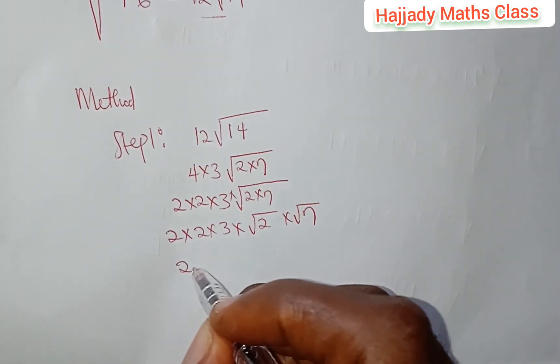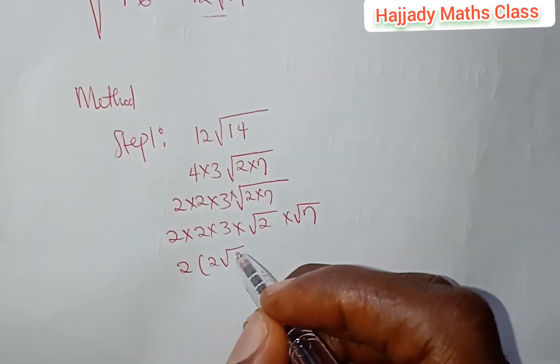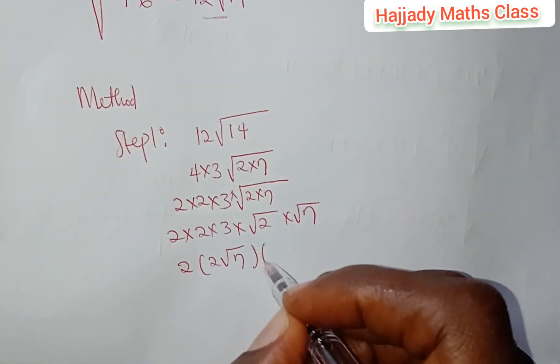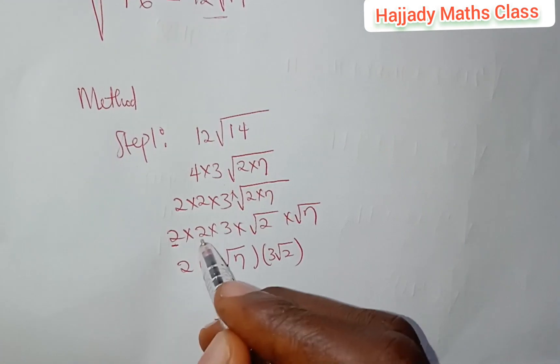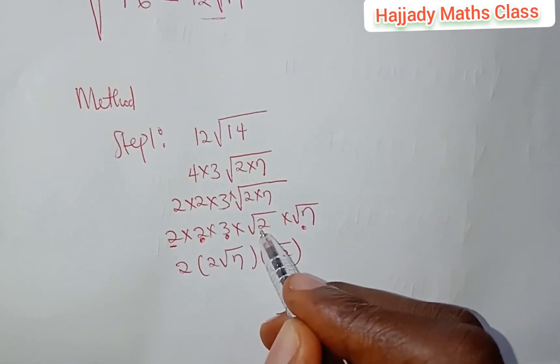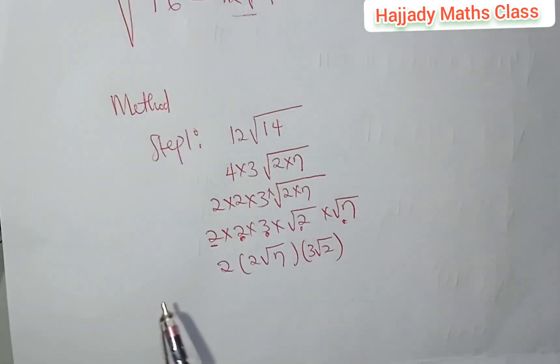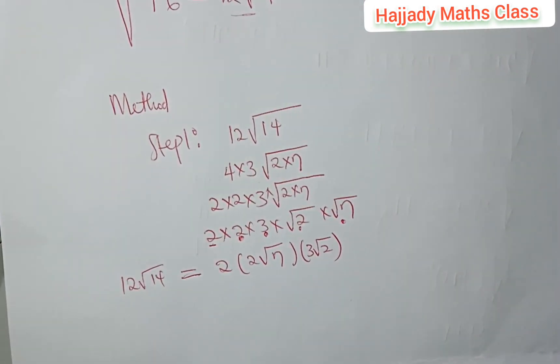Now, here we can have 2 into bracket 2√7 into bracket 3√2. So, this is the first 2. I'm picking this and √7. I'm picking this and √2. Now, we know that 12√14 is equivalent to this.